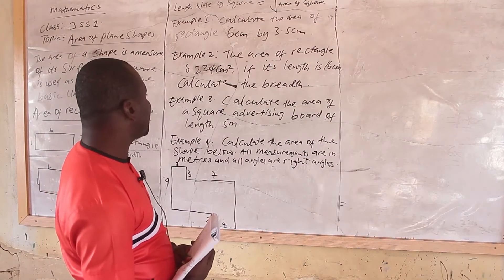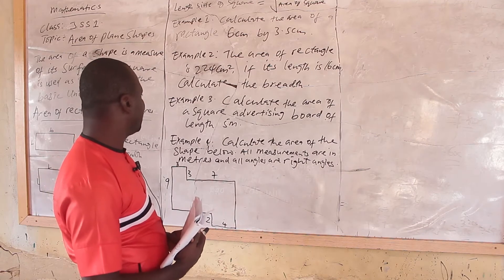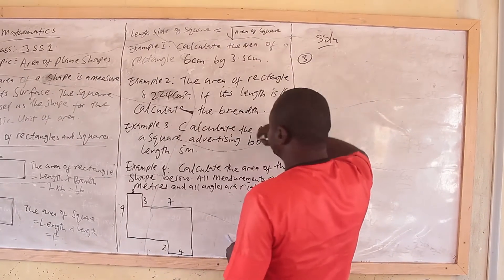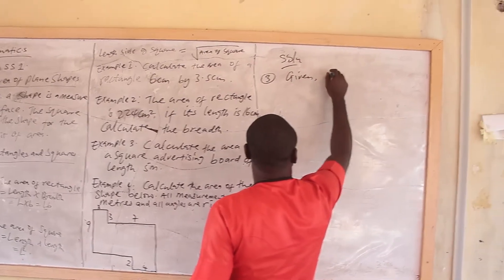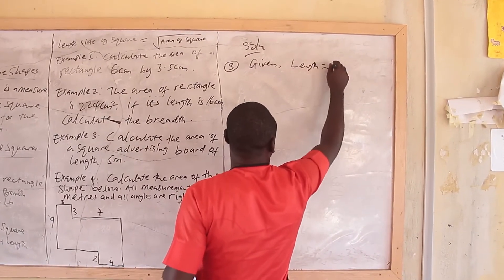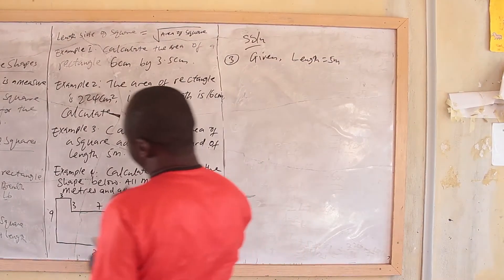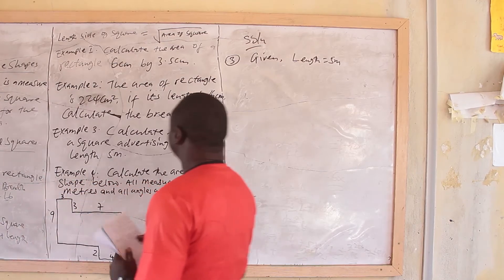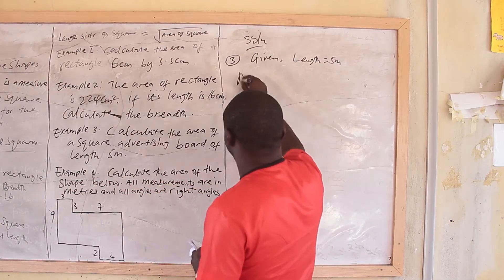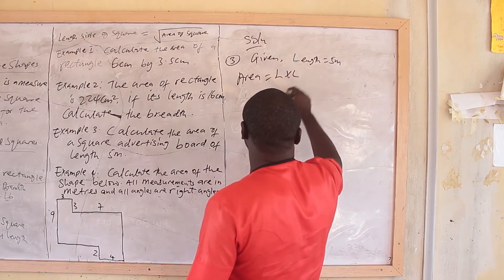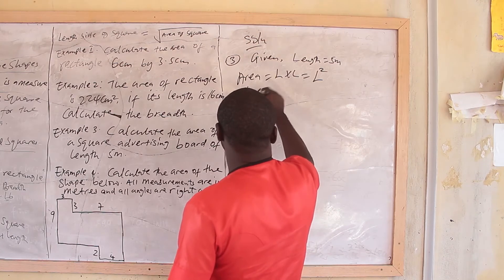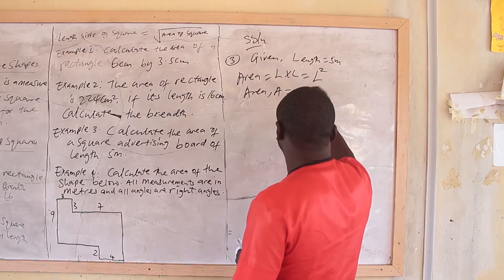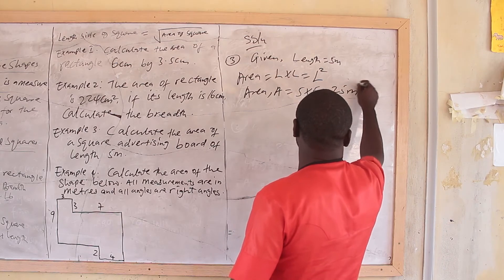Example two: calculate the area of a square advertising board of length 5 meters. Solution: a square is a plane shape in which all the sides are equal. That means the area equals length times length, which is L squared. When L equals 5 meters, area equals 5 times 5, which equals 25 meters squared.